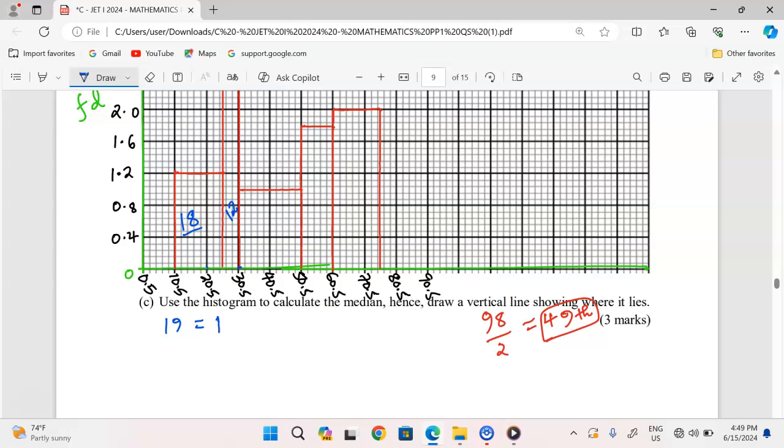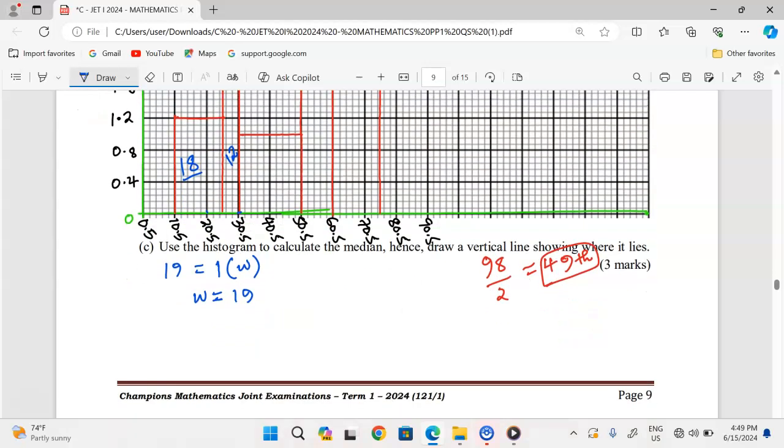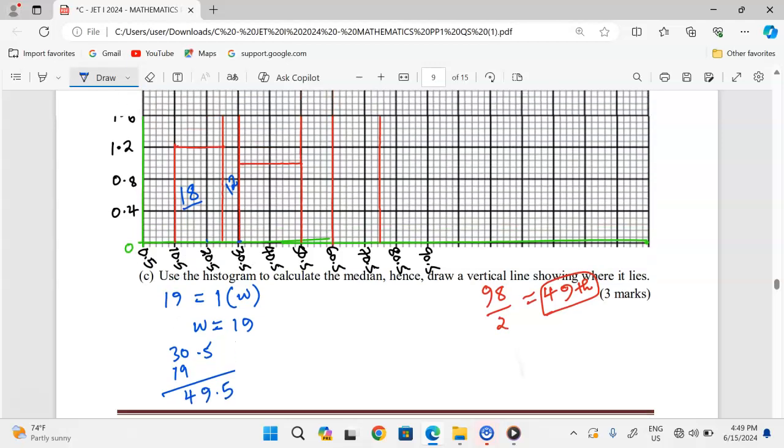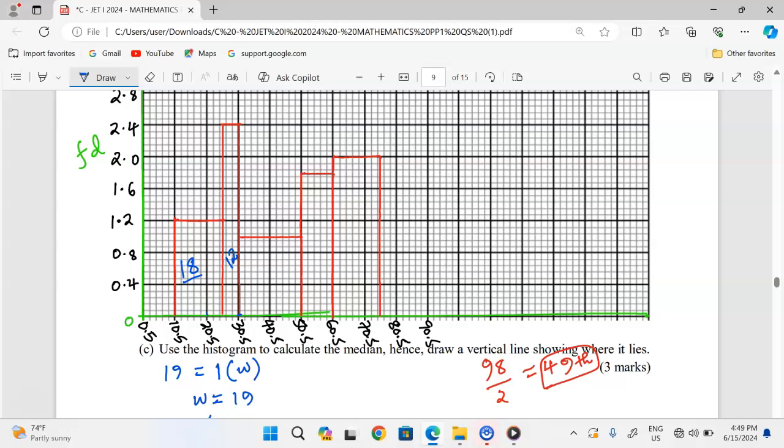19 students, which is the area, is given by a height of 1 and unknown width, which means the width automatically becomes 19. So we need a width of 19 units, which means we add 19 units from 30.5. When we add 19 to 30.5, we get 49.5 as the median. This is where it's going to be, so we add those units and find ourselves at this point.